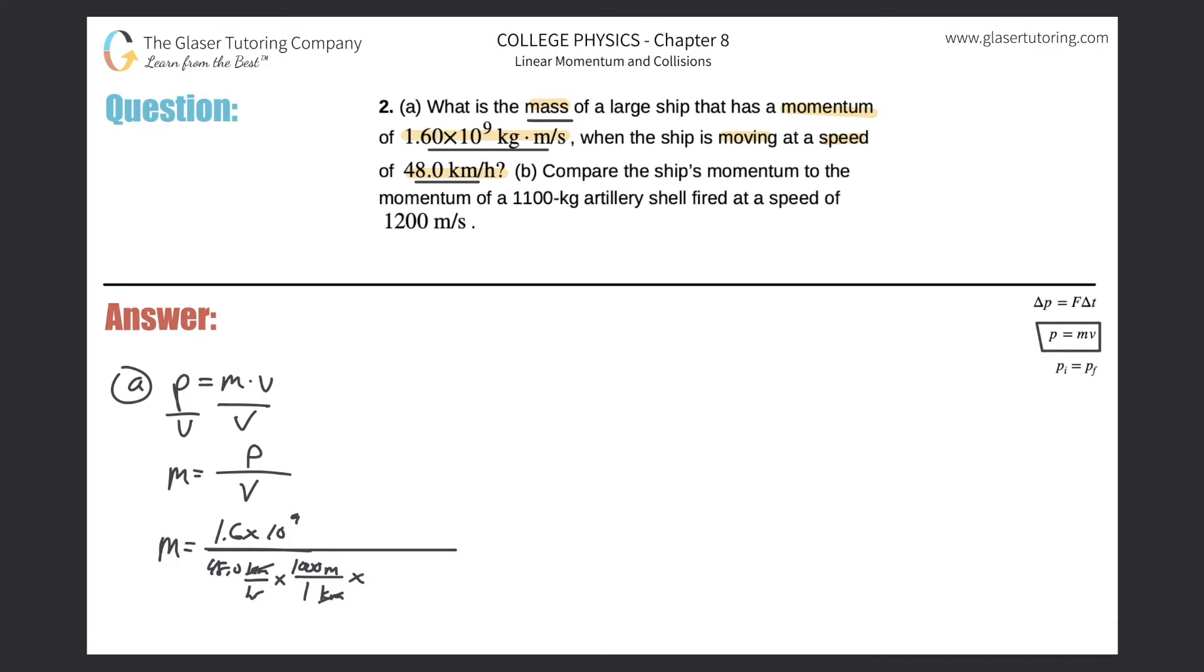Now I got to get from hours to seconds. And remember the quick relationship here, that for every one hour, there are 3,600 seconds. So there goes the hours, and hence you're left with meters per second. So now all we would have to do is plug that all in, 48 times 1,000 divided by 3,600, and that will give us the velocity in meters per second.